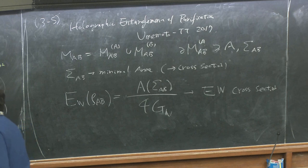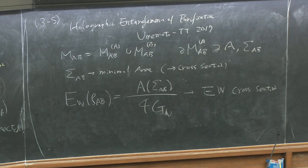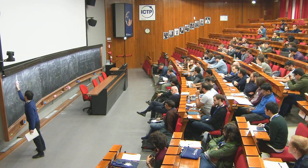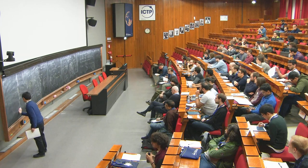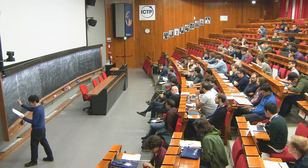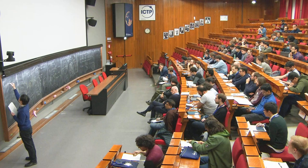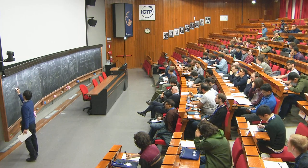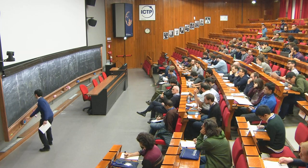This seems to be one of the most natural quantities we can associate with the entanglement wedge. The next question is: what does this mean? Our conjecture is E_W(rho_{AB}) equals a nice quantity called entanglement of purification, which is purely defined on the CFT side. I will explain the definition of this quantity.